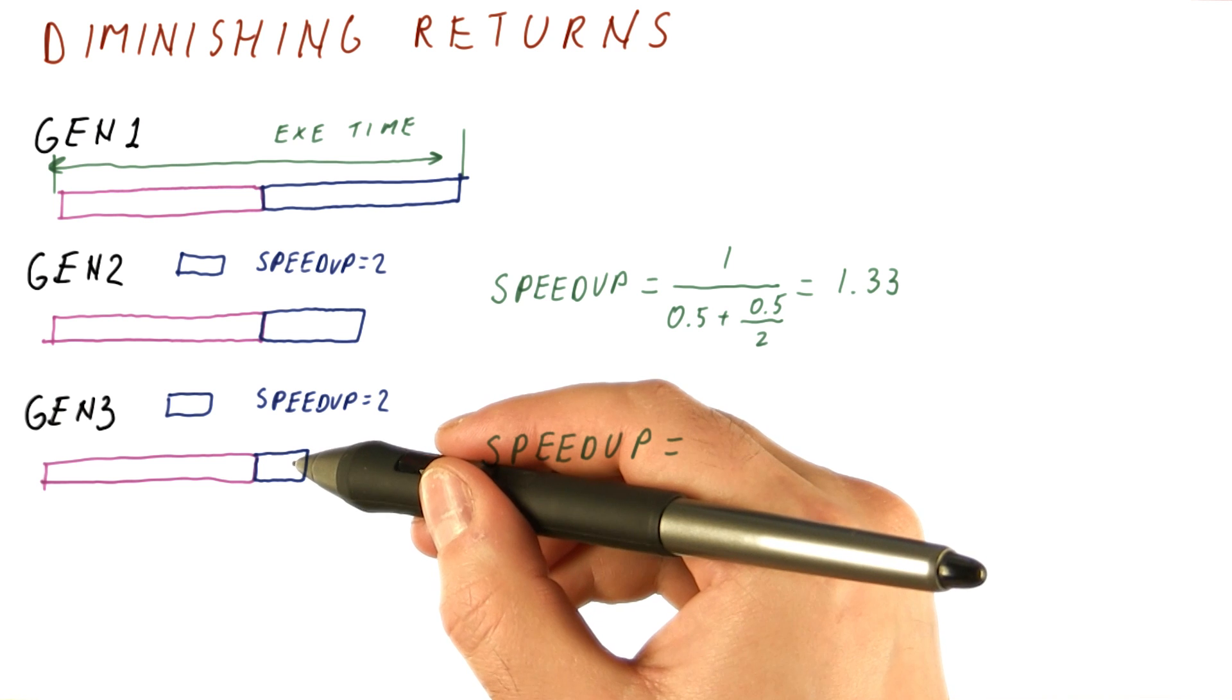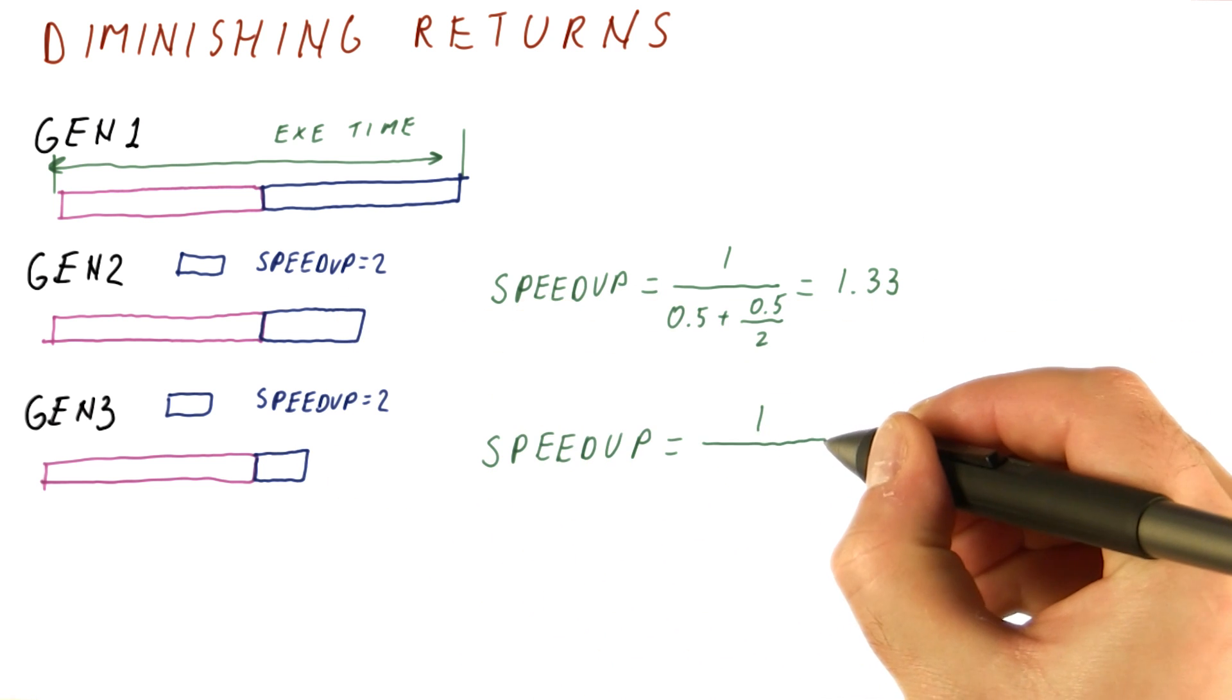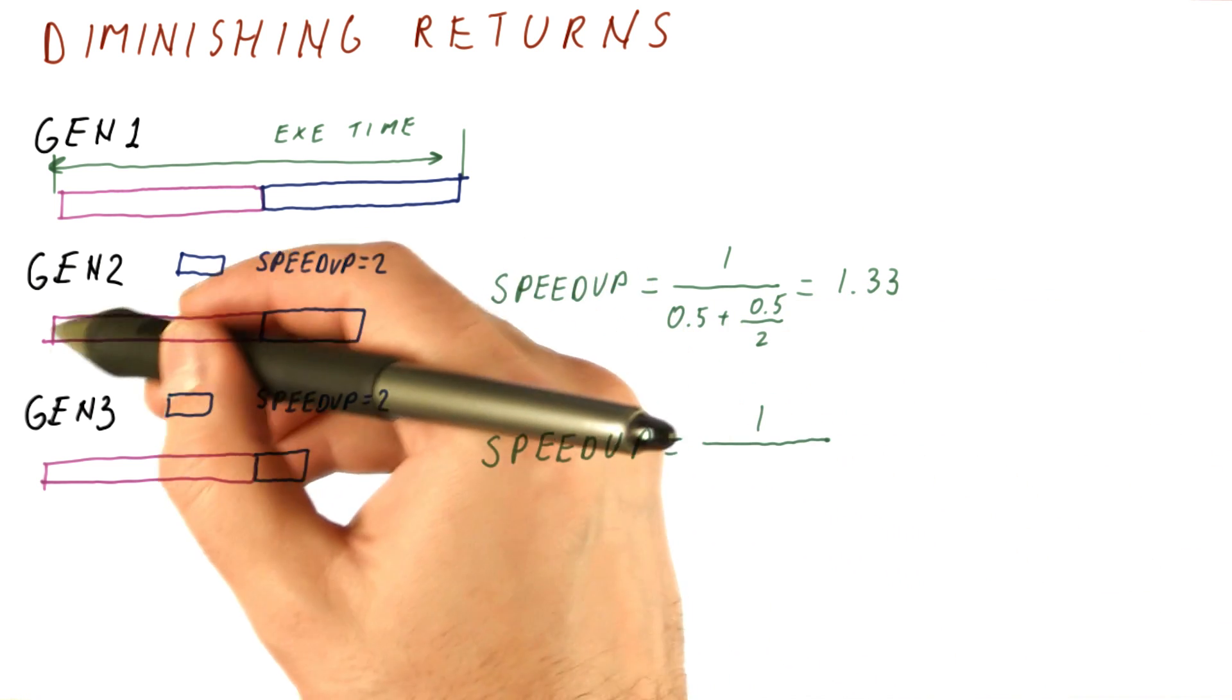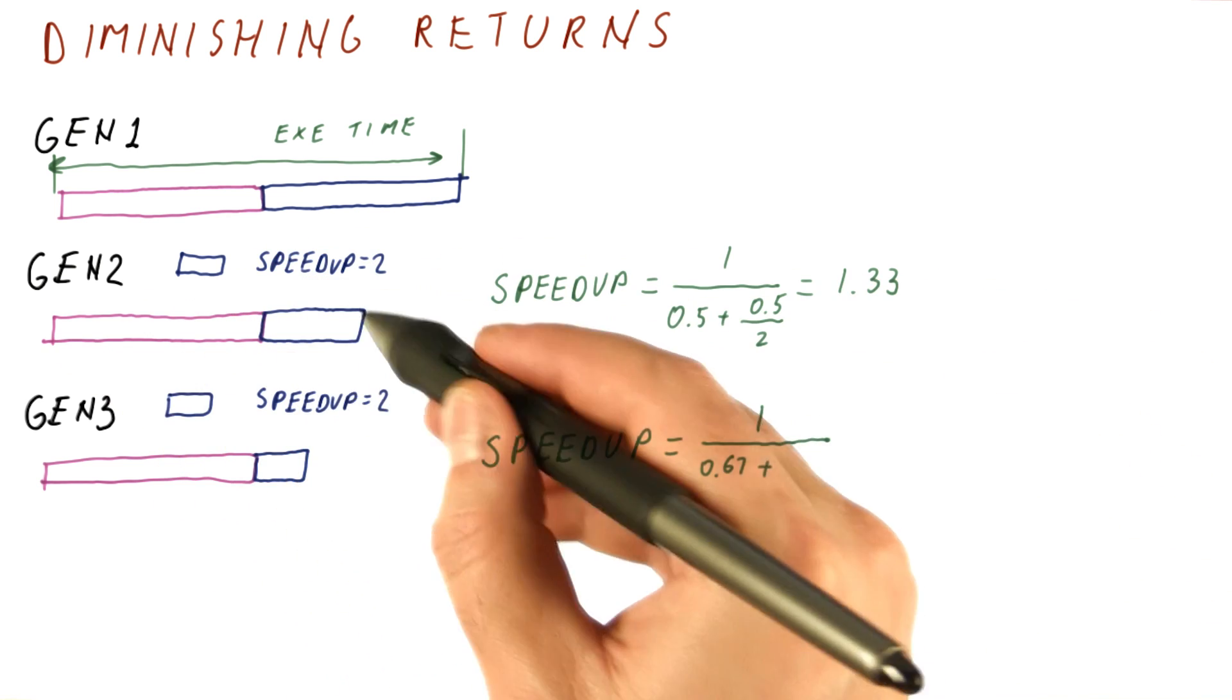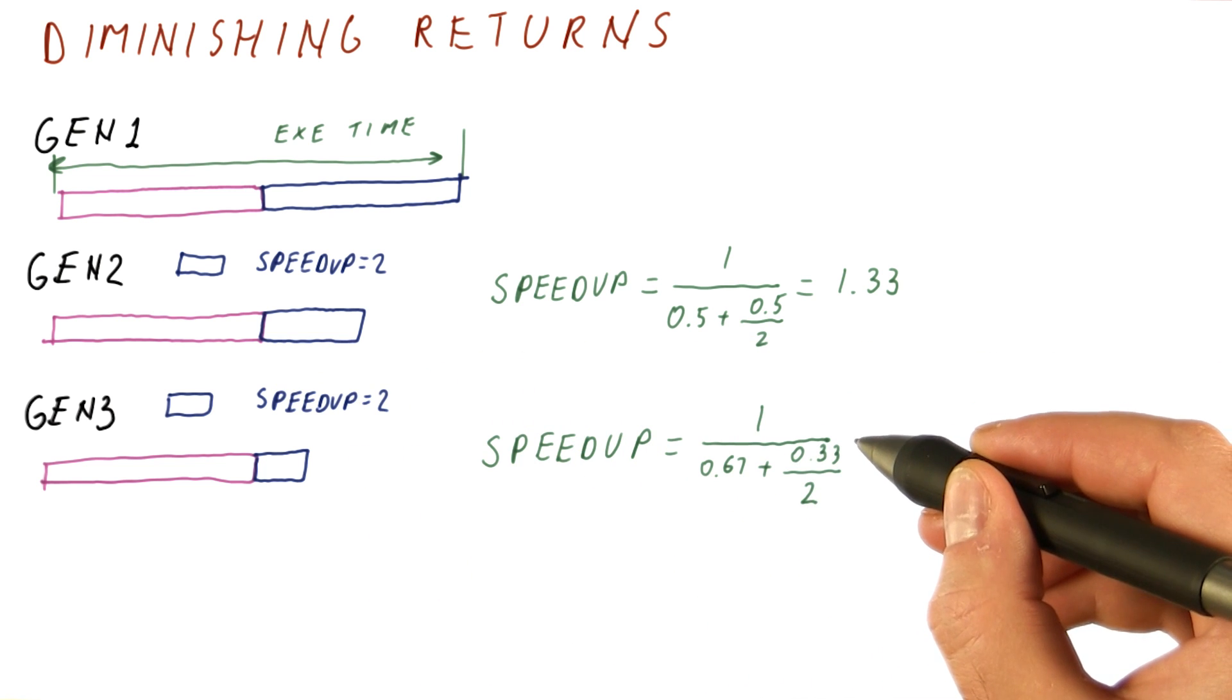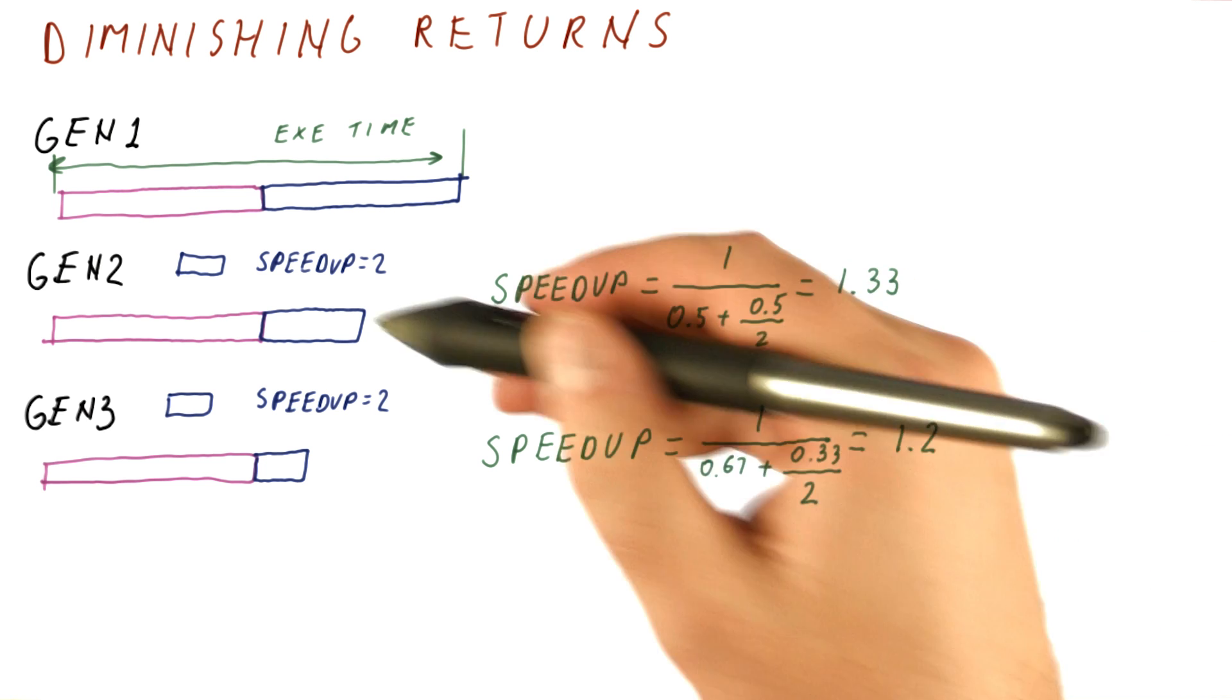The speedup of the gen 3 processor over a gen 2 processor is 1 over, and now we have to be careful. The unaffected part is now 2/3 of the execution time. The affected part is only 1/3, and that part is still affected by a factor of 2, so the overall speedup is 1.2 over gen 2.